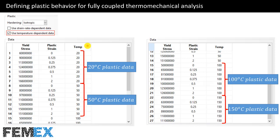In this table, I have defined the plastic data at 20°C, then at 50°C, then at 100°C, and finally at 150°C. For finding the plastic data between these temperatures, Abaqus uses interpolation. If the temperature goes below 20°C, Abaqus uses the plastic data at 20°C. If the temperature goes above 150°C, Abaqus uses the data at 150°C.